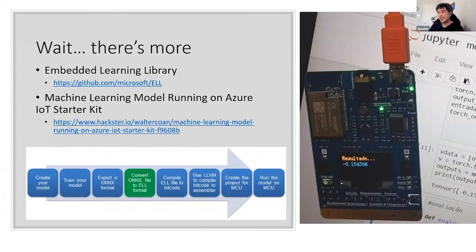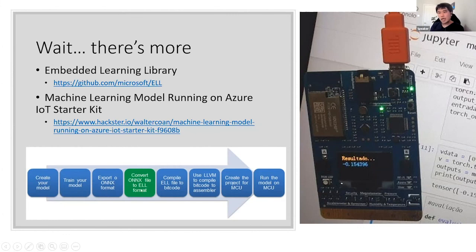There's even more to ONYX — you can use it as an intermediate format with an embedded learning library that is also open source on GitHub. You can train your model, export it to ONYX format, and there's a converter from ONYX to ELL format that converts it to run on an MCU — a microcontroller unit — without going through a traditional Linux or Windows device.